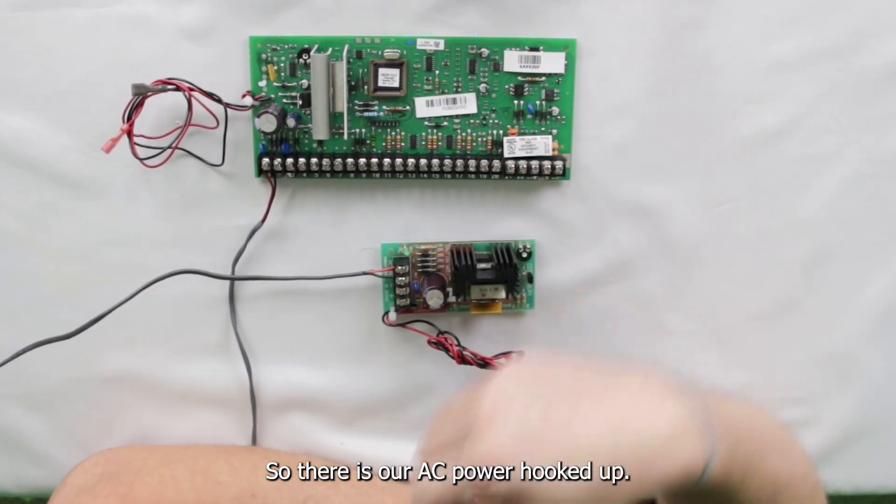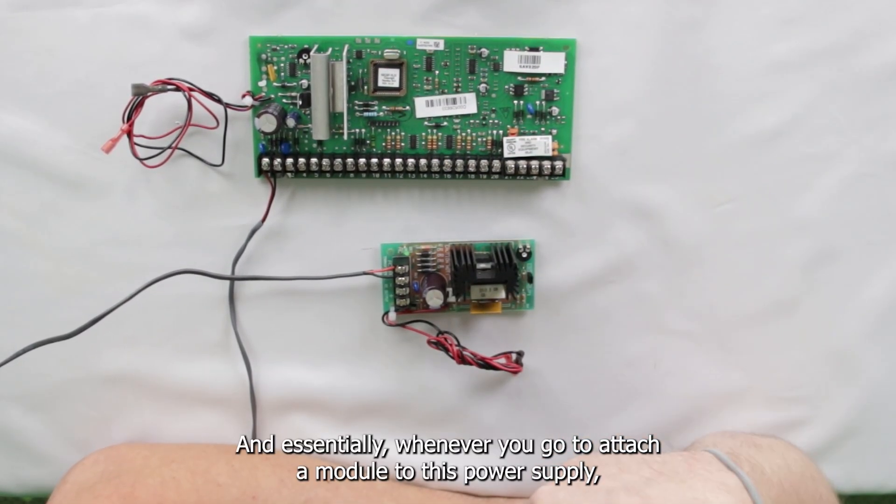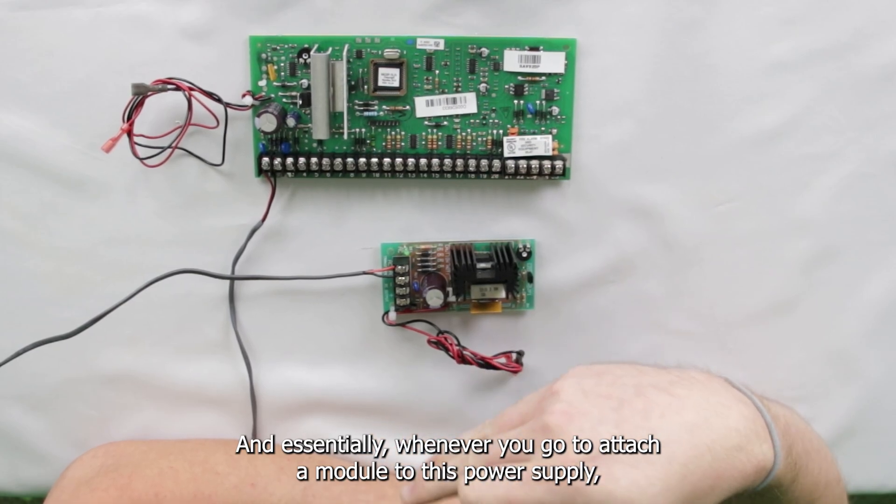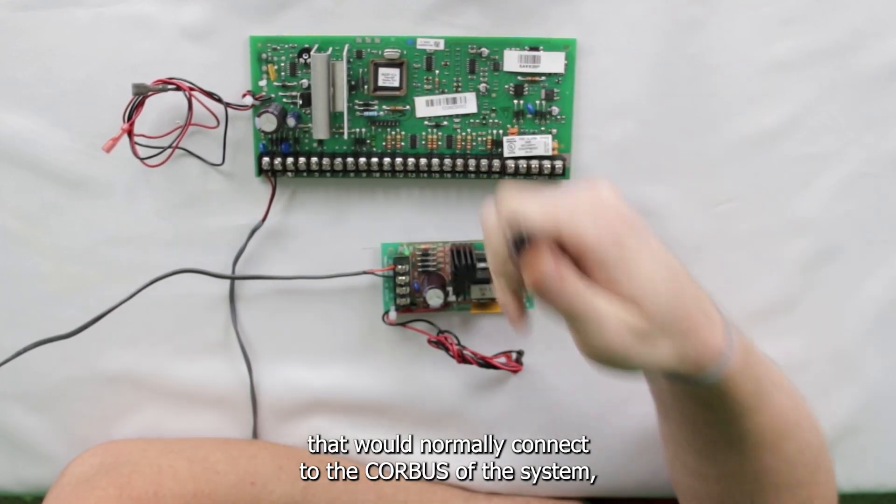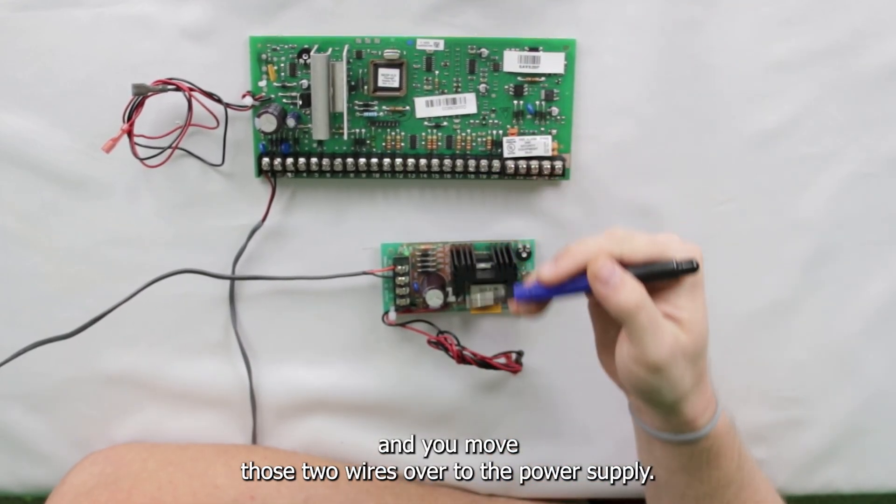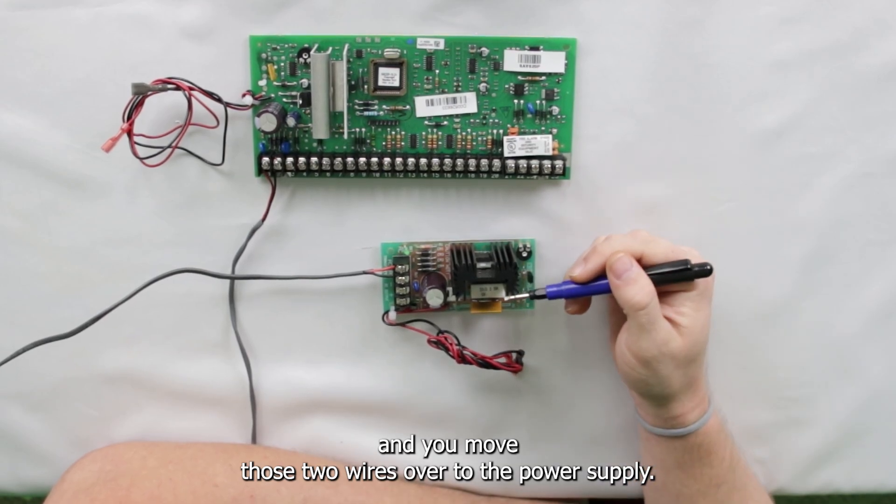Alright, so there is our AC power hooked up, and essentially, whenever you go to attach a module to this power supply, all you're going to do is you're going to take the two power wires that would normally connect to the core bus of the system, and you move those two wires over to the power supply.